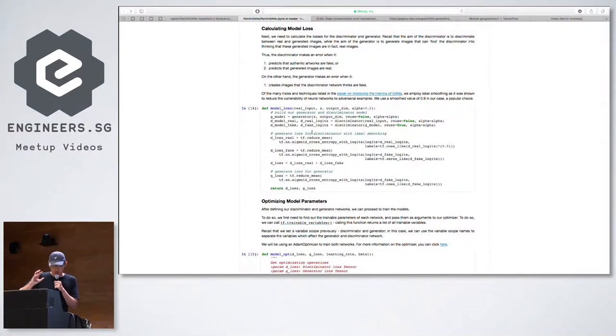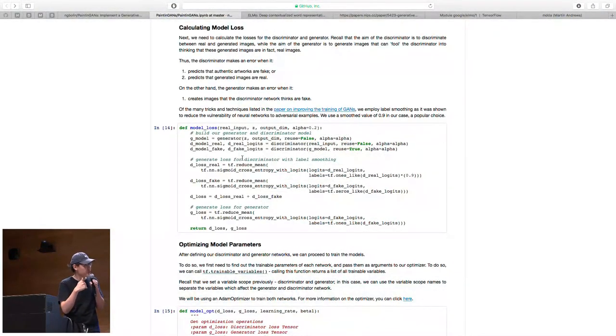So first of all, you have to code up a generator and also a discriminator. They're engaging in the zero-sum game framework. So the loss function of the generator comes from not being able to fool the discriminator. On the other hand, the discriminator has two different kinds of loss.